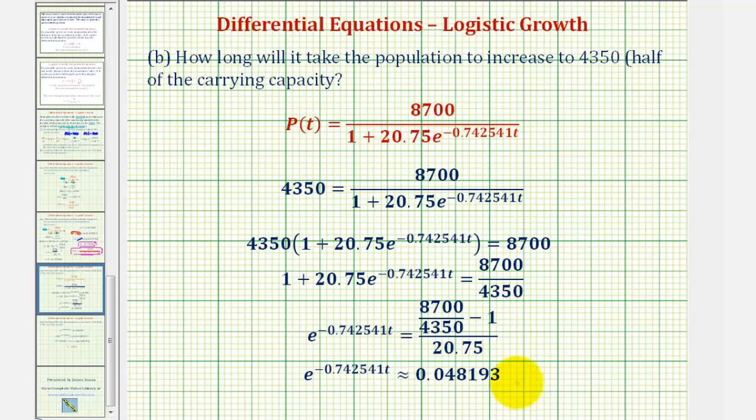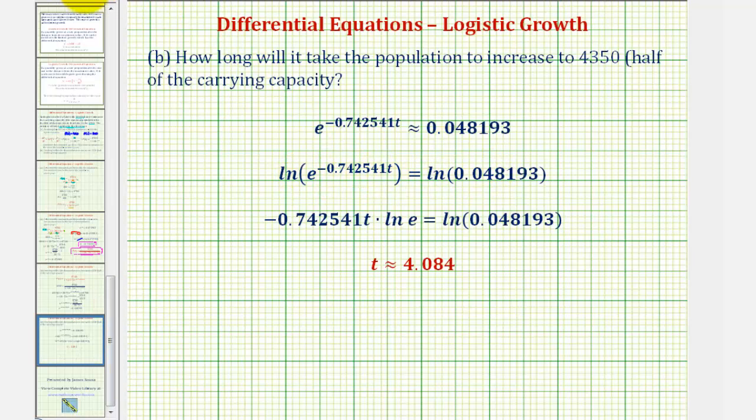To solve this exponential, we'll take the natural log on both sides of the equation. We apply the power property of logarithms, taking this exponent and moving it to the front. This gives us this t term times ln(e), which is 1.